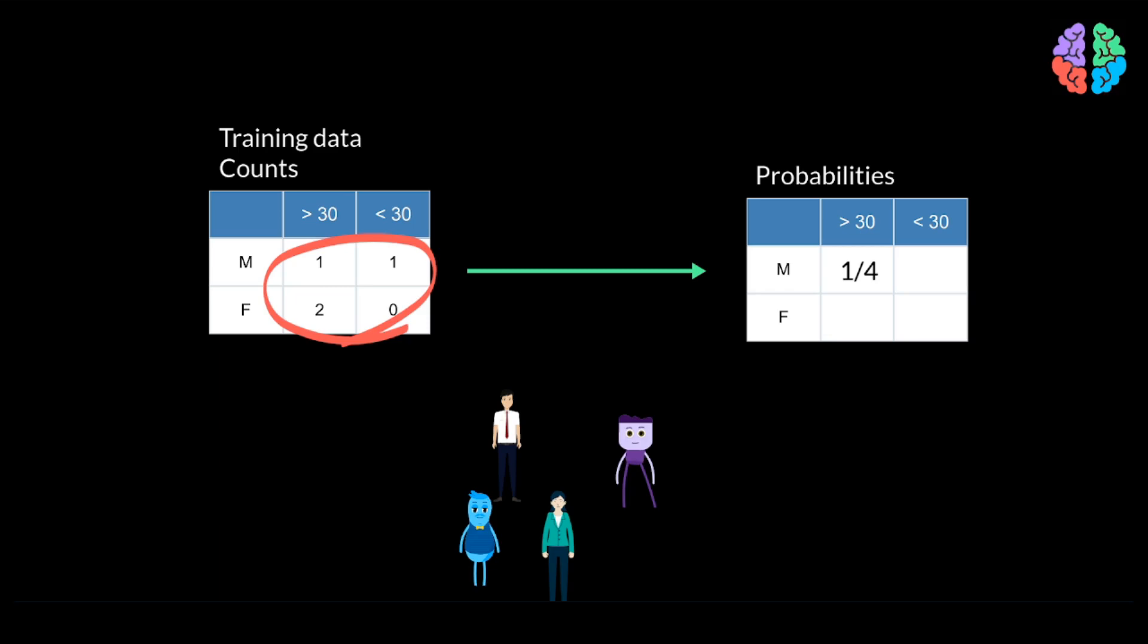Likewise, the probability of a male person aged less than 30 is 1 in 4. There are two females out of 4 aged more than 30, so in terms of probabilities, it's 1 by 2.